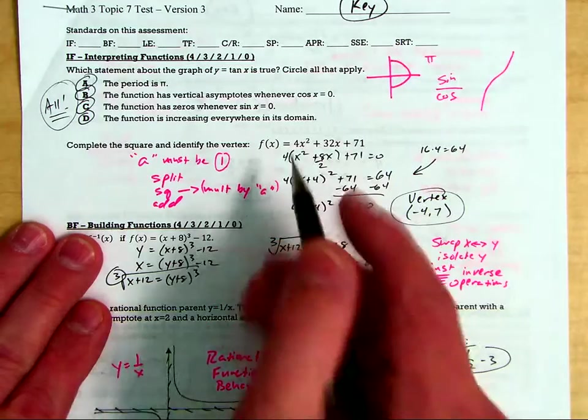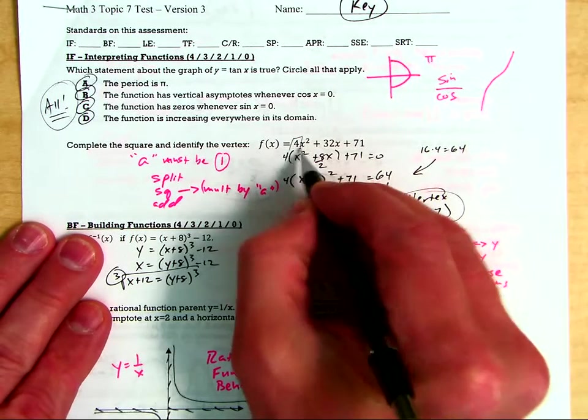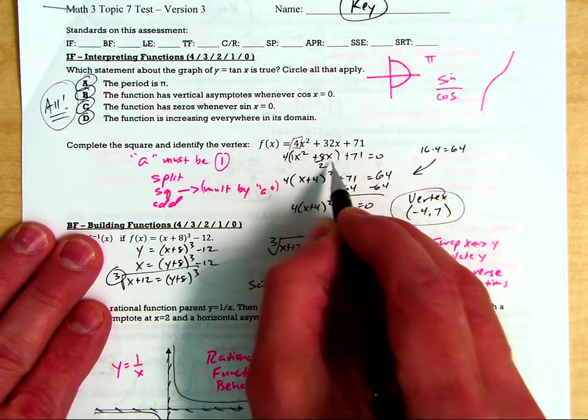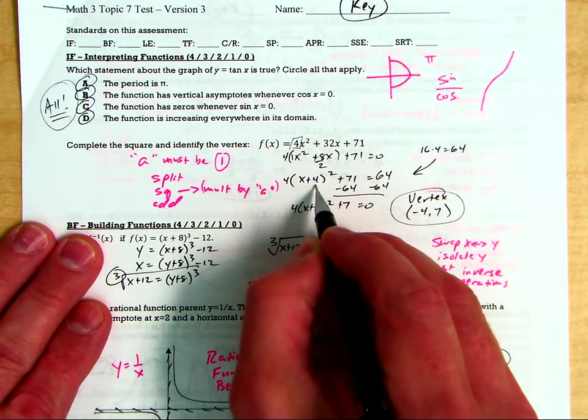Complete the square and identify the vertex. You have to be able to get rid of that a. Factor out the a so that the leading coefficient is one. Then, only then do you split it squared at it.